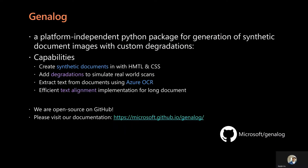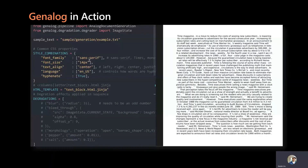Thank you, Amit. Genalog is an open source Python package for generating synthetic documents. We provide four main capabilities, including the ability to create synthetic documents and customize them with HTML and CSS. We can add degradations onto these documents to simulate real-world scans, then extract text from such documents using Azure OCR. Finally, we also provide efficient text alignment implementations for long documents. That's enough words on Genalog — let's see it in action.